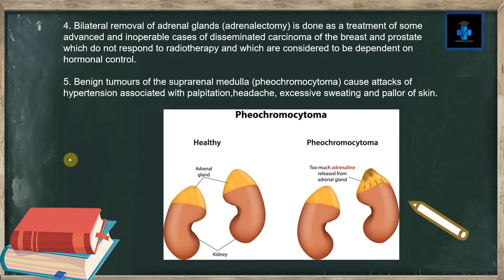Bilateral removal of the adrenal glands, also known as adrenalectomy, is done as a treatment for some advanced and inoperable cases of disseminated carcinoma of the breast and prostate, which do not respond to radiotherapy and which are considered to be dependent on hormonal control.